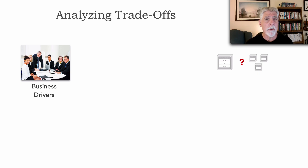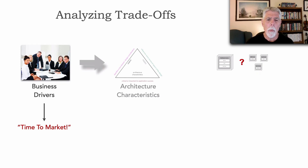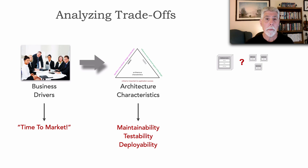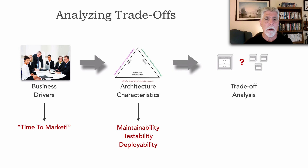For this particular system, the business is most concerned about time to market. As an architect, we ask: what are the corresponding architectural characteristics that would support this business need? Those happen to be three main things: high levels of maintainability — the ease of finding where to change the code; testability — the ease and completeness of testing; and finally deployability — the ceremony involved, the frequency of deployment, and the overall risk of deploying our software. We take these factors, which form capabilities in the architecture, and now start to do trade-off analysis.